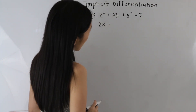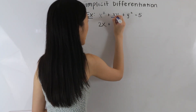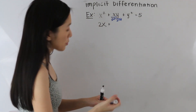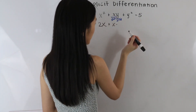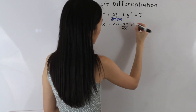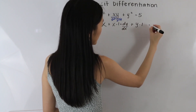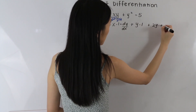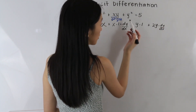Then we have a product of two functions, so we need to use the product rule. Our first function is x and our second function is y. The product rule tells us that the derivative of a product is equal to the first — x — times the derivative of the second. The derivative of y is 1 times dy over dx, plus the second function y times the derivative of the first, which is 1. Then we have plus the derivative of y squared, which is 2y times dy over dx. We have to multiply by dy over dx here because we are taking the derivative of a y variable.